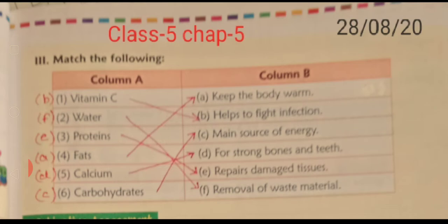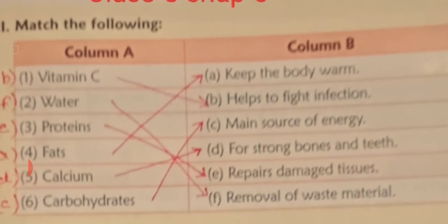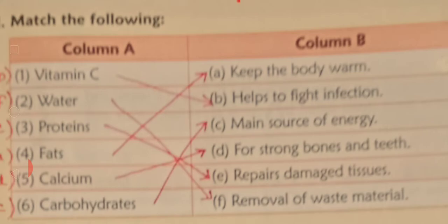In Column A, write the first number: Vitamin C — V-I-T-A-M-I-N C. Second number: Water — W-A-T-E-R. Third number: Proteins — P-R-O-T-E-I-N-S. Fourth number: Fats — F-A-T-S.